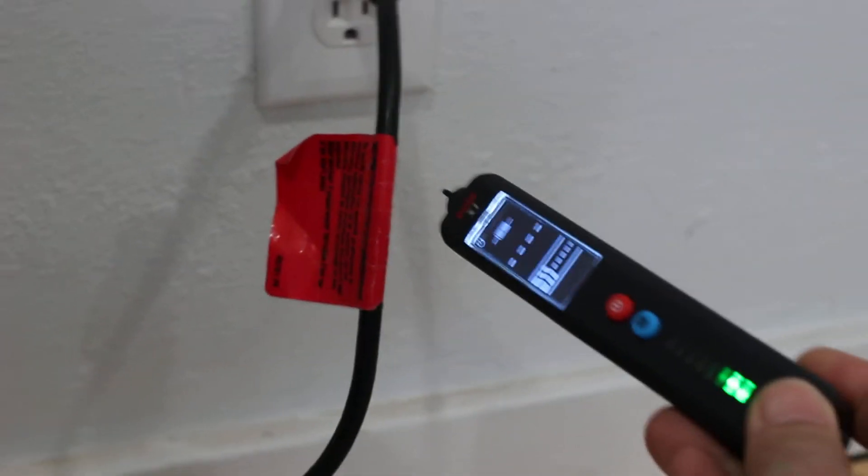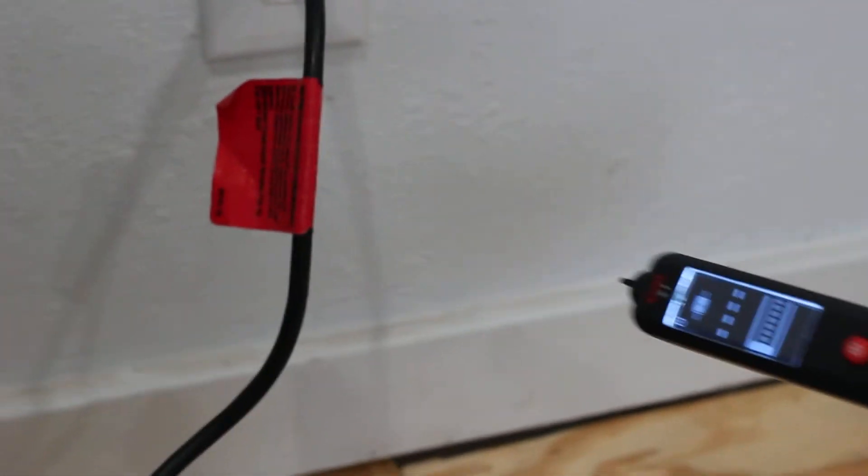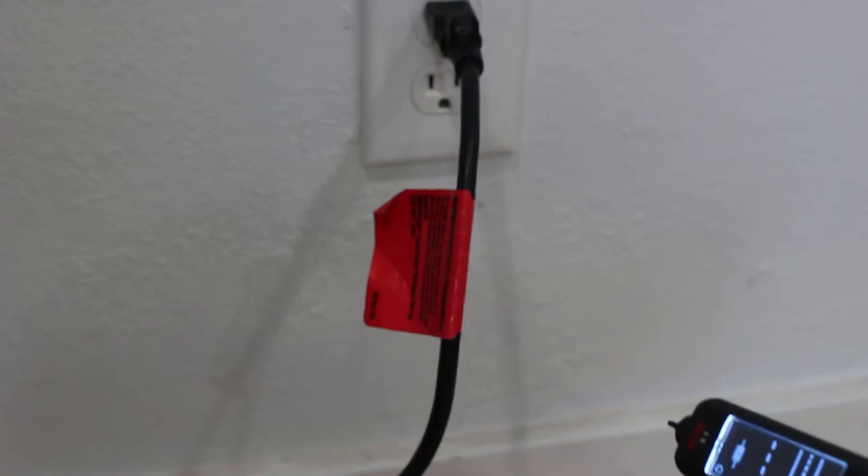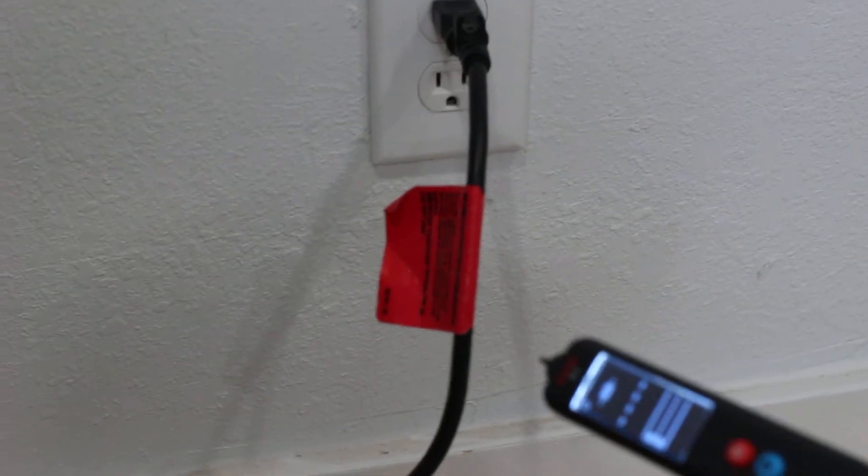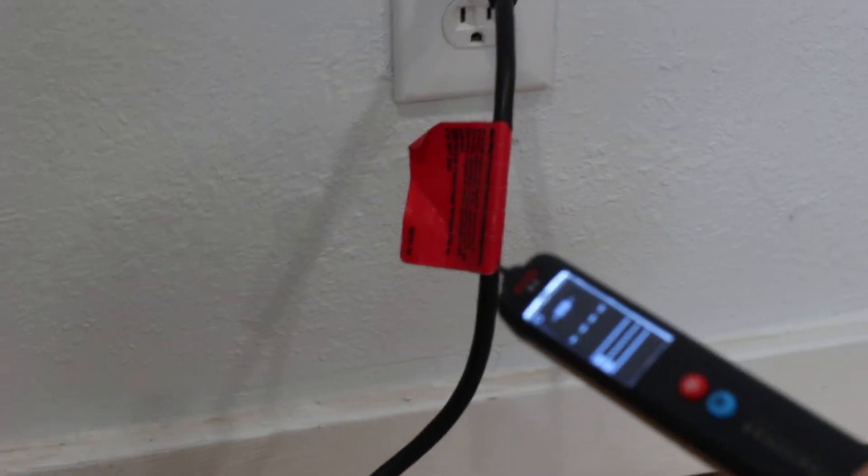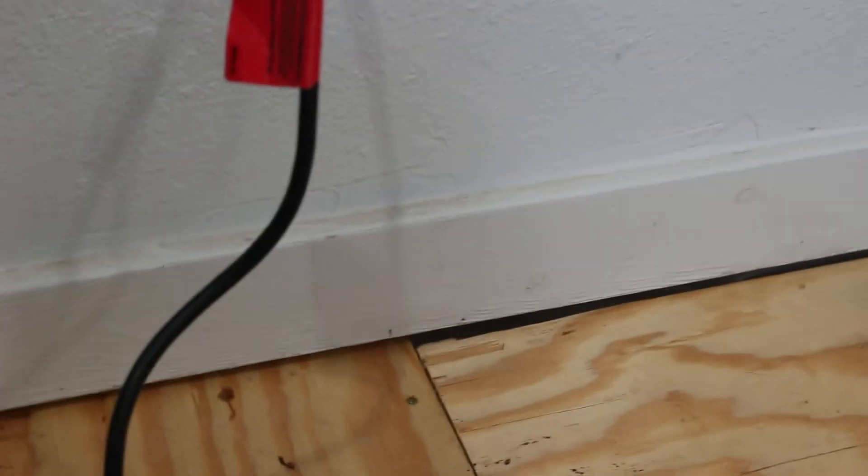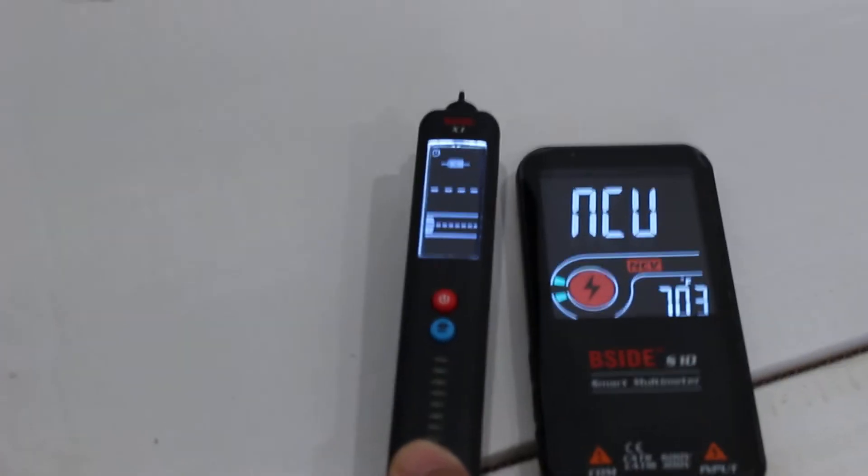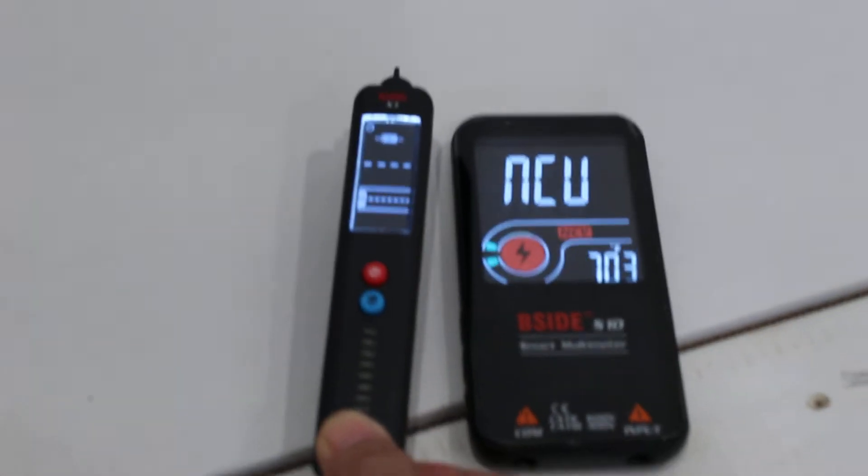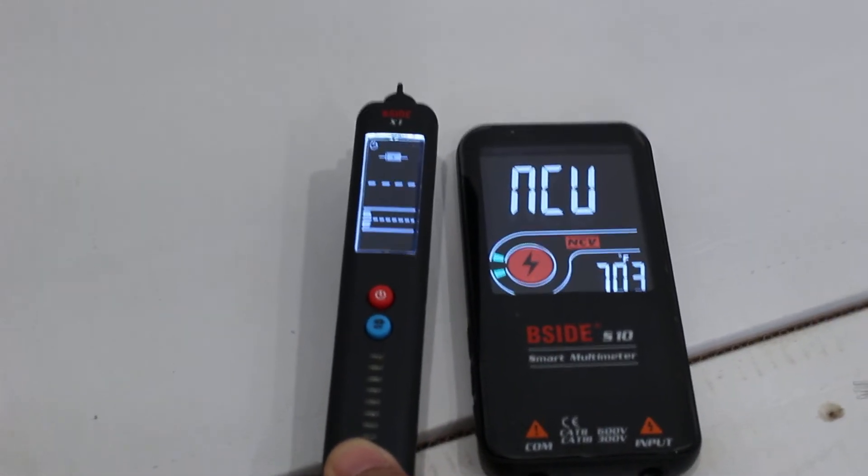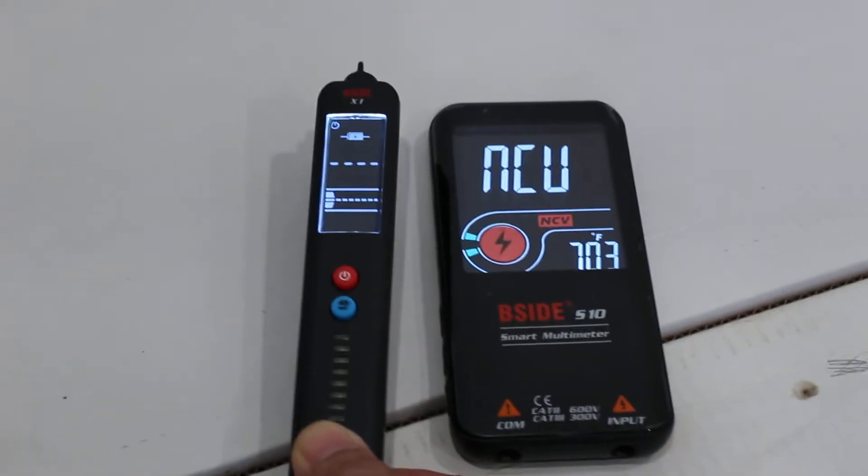And let's do the same test with the wire plugged in. It gives you another idea, so now again we have this. So you notice the wire acts like an antenna, and if we bring this probe closer, it's much further away and it can still detect it. So in terms of sensitivity, the dedicated voltage probe is more sensitive at non-contact voltage detection than the S10 or probably even the S11 meter. So just something to consider.